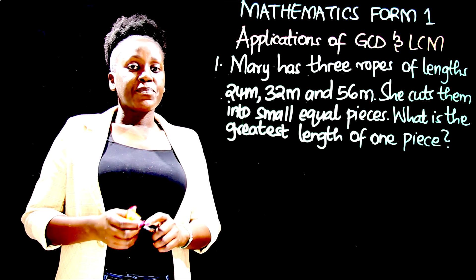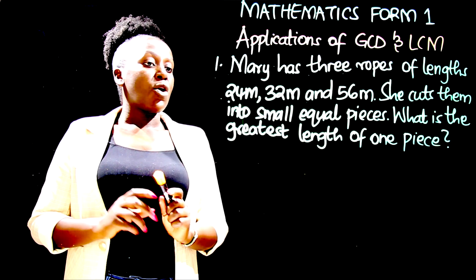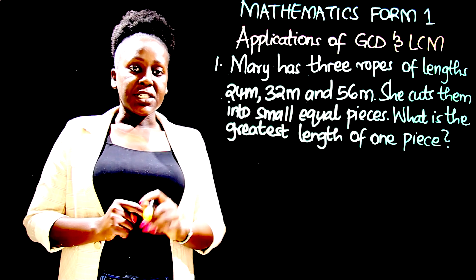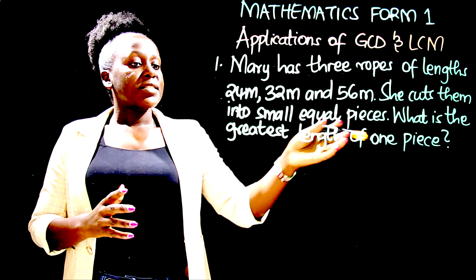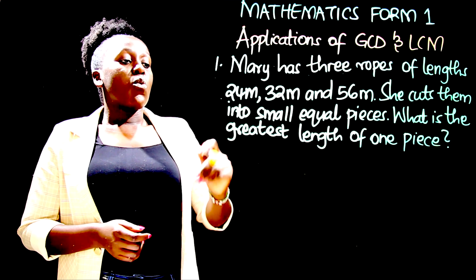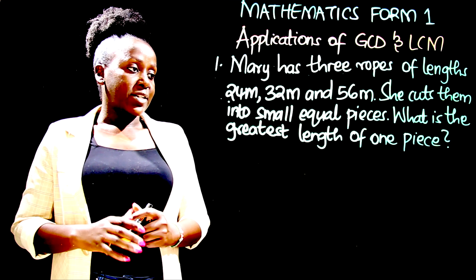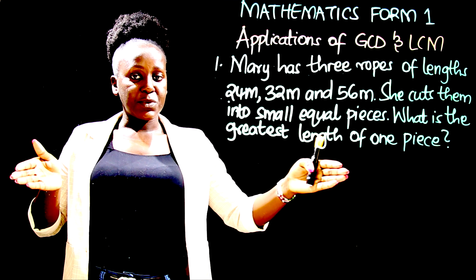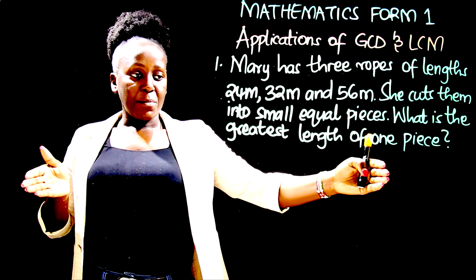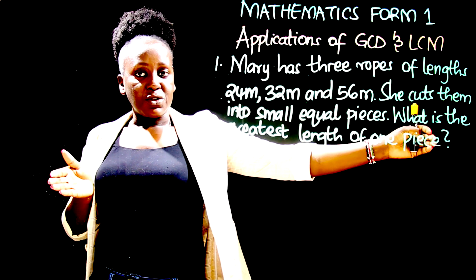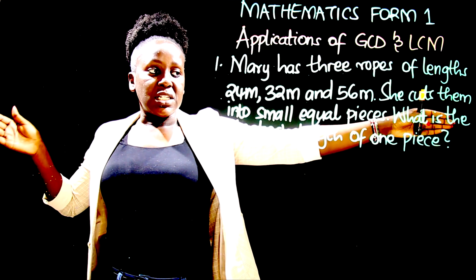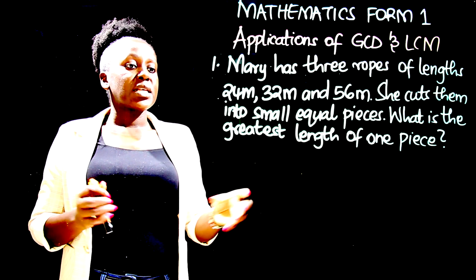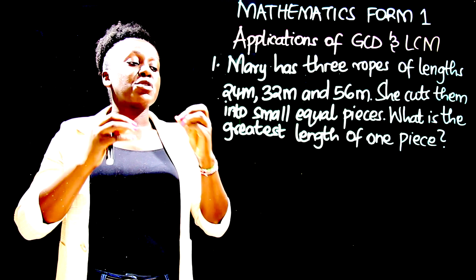Question one: Mary has three ropes of lengths 24 meters, 32 meters, and 56 meters. She cuts them into small equal pieces. What is the greatest length of one piece that she can obtain? So remember, she has three different ropes — one is 24 meters long, another one is 32 meters, and another one is 56 meters. She wants to divide the ropes into small equal pieces and they have to be of the same length.